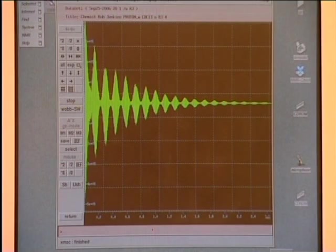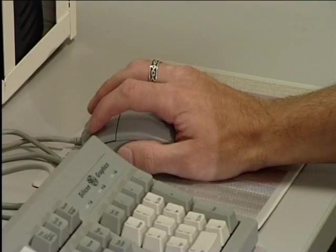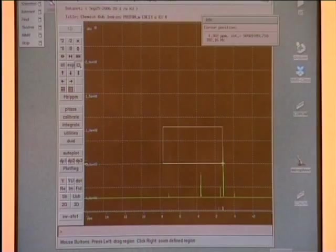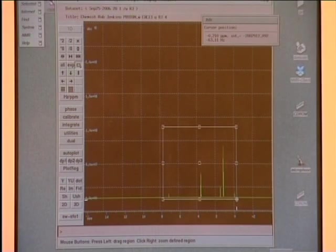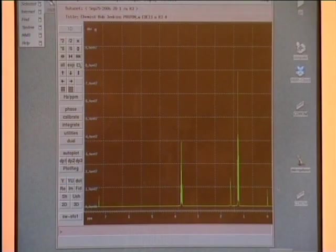Under the control of the computer, the instrument applies several, typically 16, pulses of radio waves to the sample and collects the responses, called resonances. These resonances are summed up by the computer and processed to give a spectrum. This takes about 5 to 10 minutes.